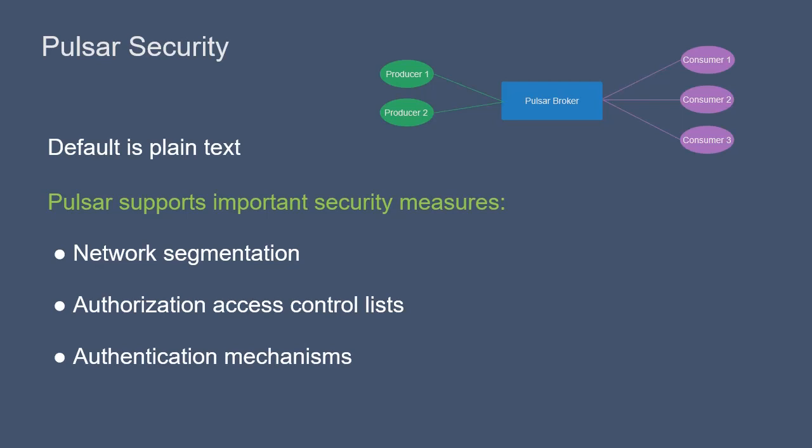Pluggable authentication mechanisms are supported in Pulsar to authenticate with brokers and proxies. This authentication first occurs when the connection is established with a Pulsar broker and then reoccurs every 60 seconds by default.